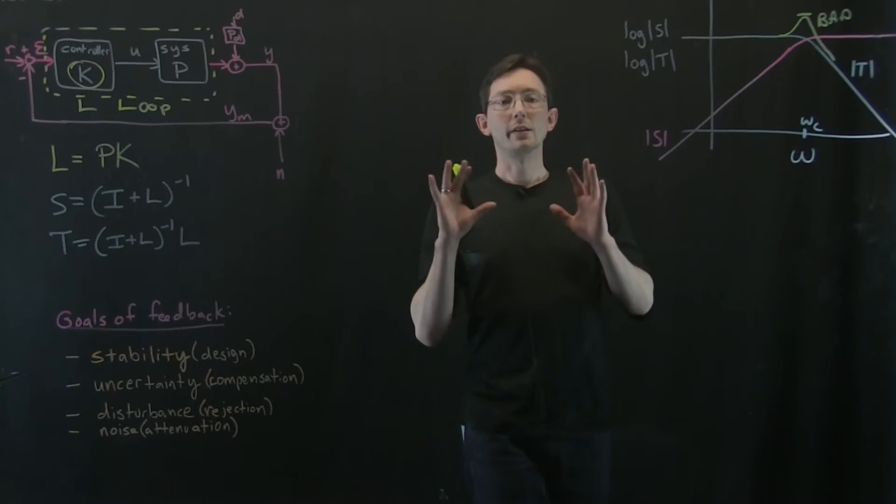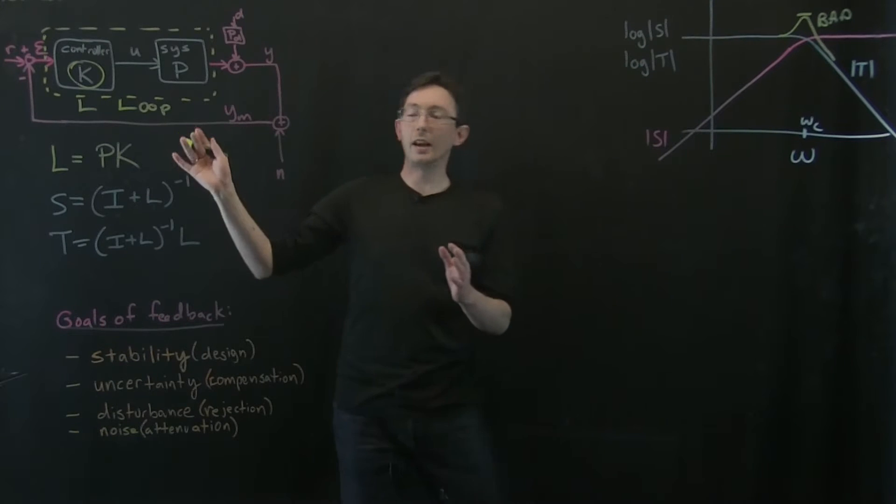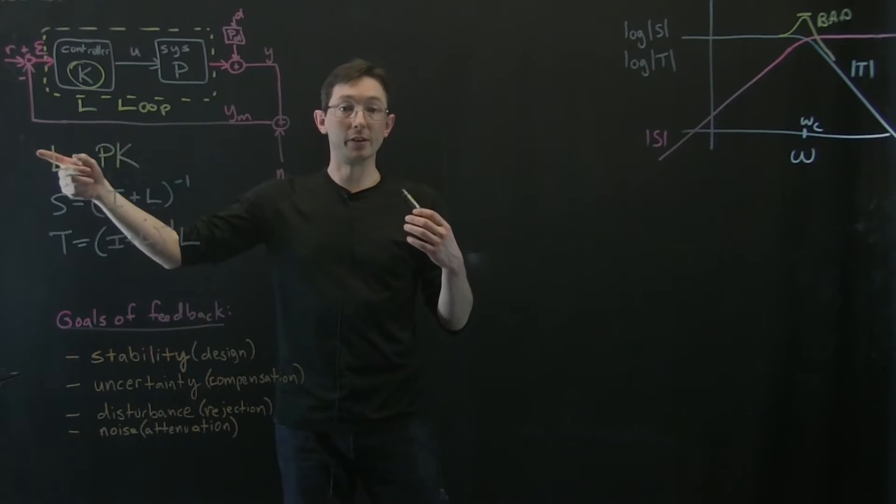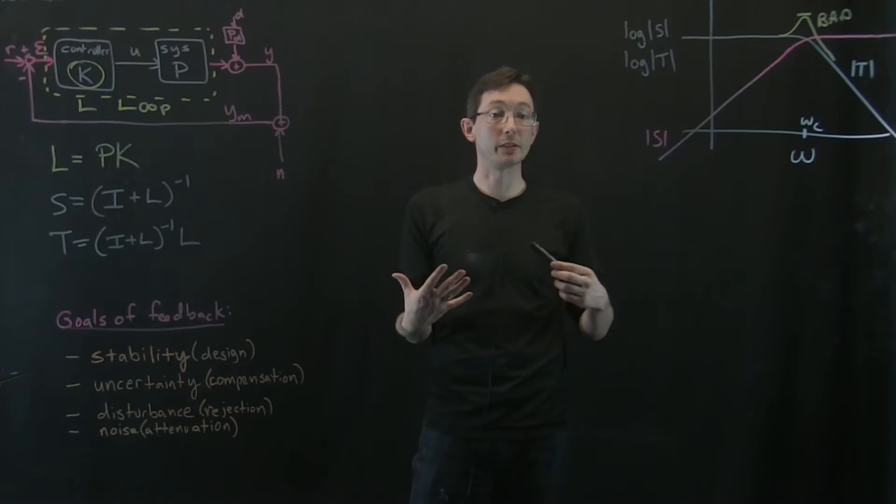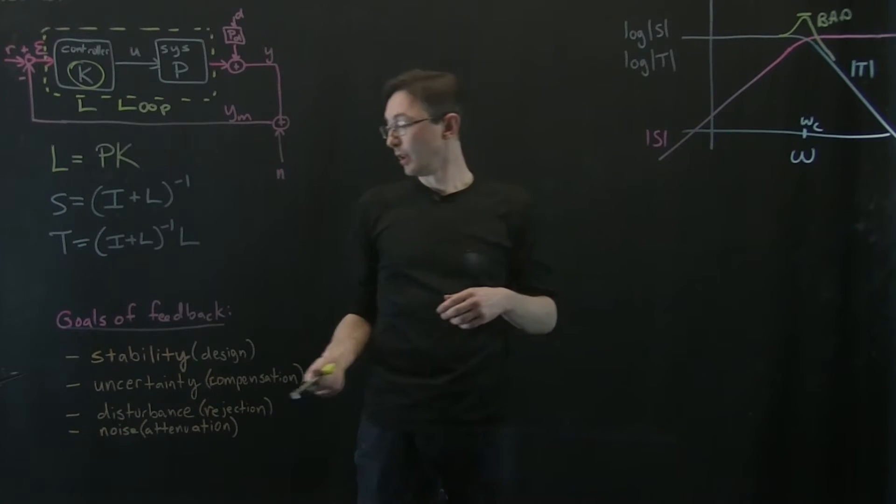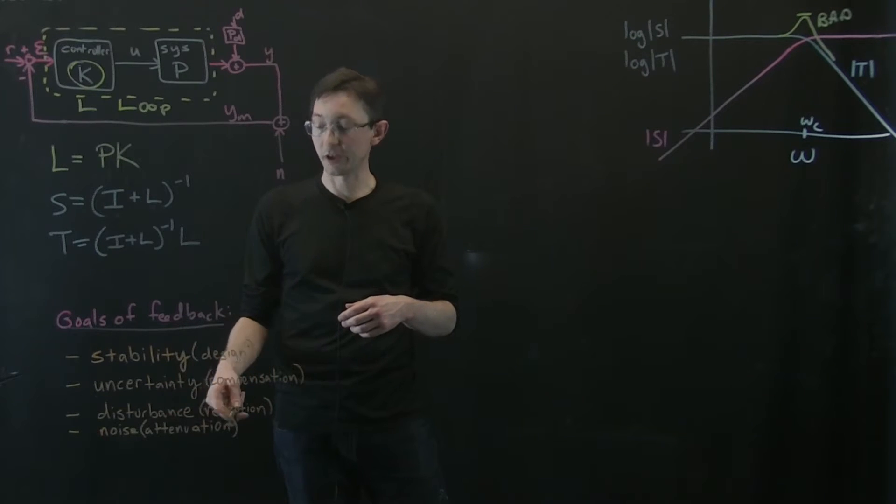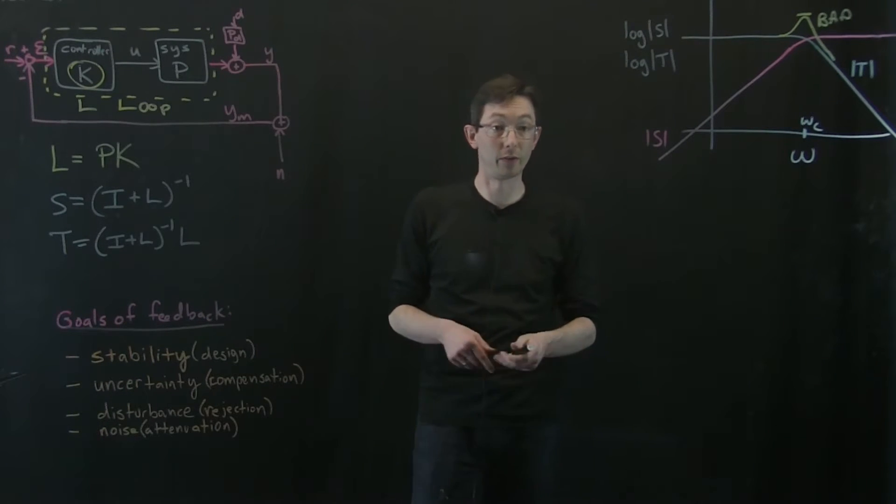Welcome back. So we've been talking about the sensitivity and complementary sensitivity functions and the loop transfer function and what we want these different transfer functions to look like for good compensation of model uncertainty, disturbance rejection, noise attenuation, reference tracking, and so on and so forth.